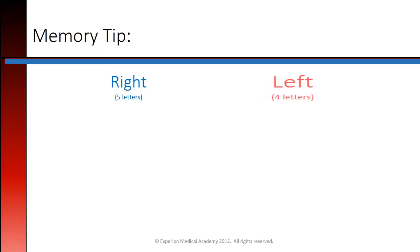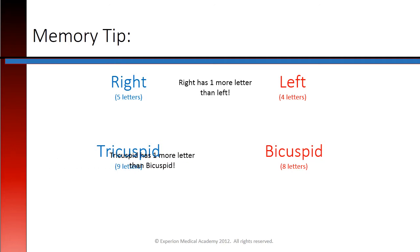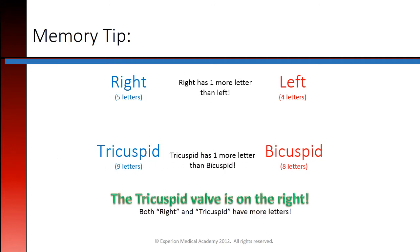Here's a memory tip. Right has five letters and left has four letters, so right has one more letter than left. Tricuspid has nine letters and bicuspid has eight letters, so tricuspid has one more letter than bicuspid. The tricuspid valve is on the right because both right and tricuspid have more letters.